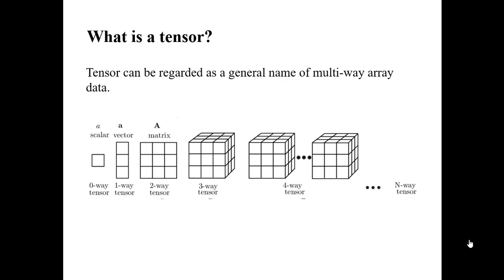Next we will see what is a tensor. A tensor can be regarded as a general name of multi-way array data. As you can see from this figure, a scalar can be regarded as a zero-way tensor, and a vector a one-way tensor, a matrix a two-way tensor. And just like you have data increase, you have arrays increase, you have tensors, the rank of tensor increases. This cube can be regarded as a three-way tensor. And when you have another cube, you have four-way tensor. Similarly, just like you have more pieces of information, you have higher rank of tensor. This concept of tensor and this definition of tensor is used in the field other than mathematics.